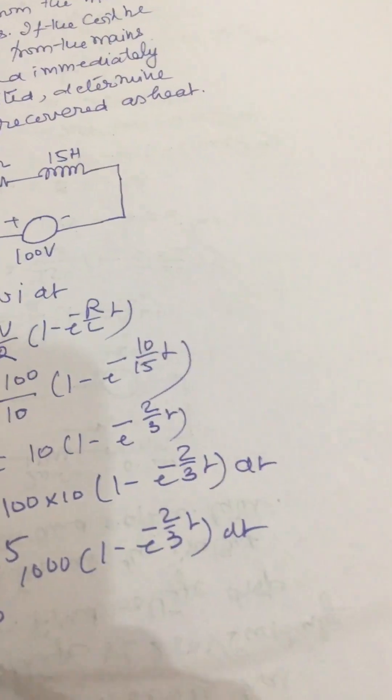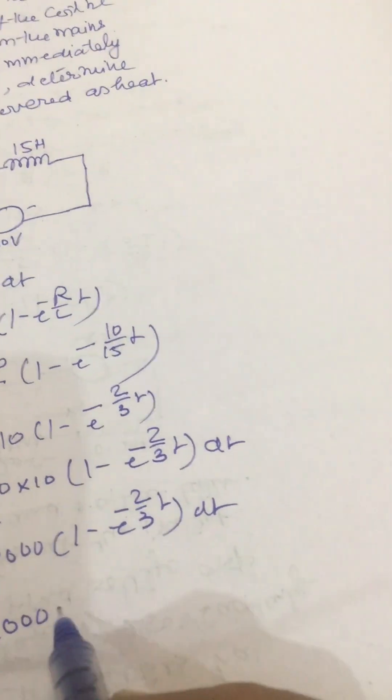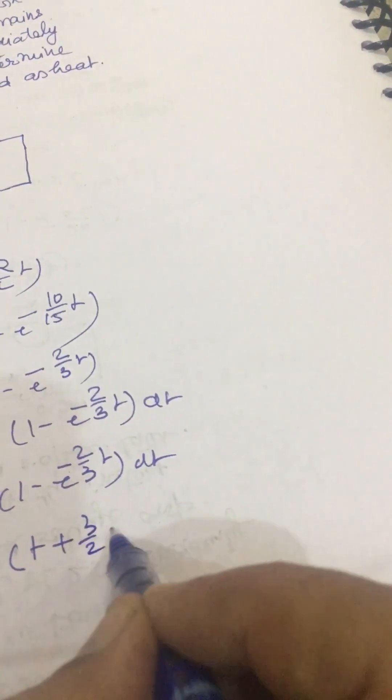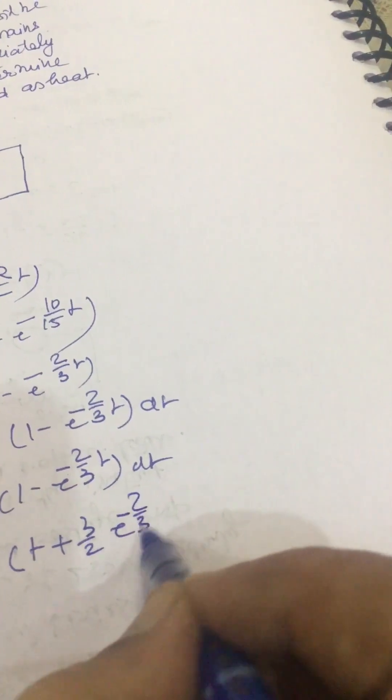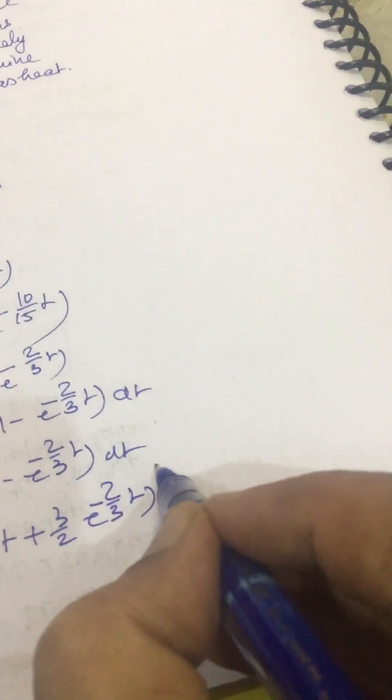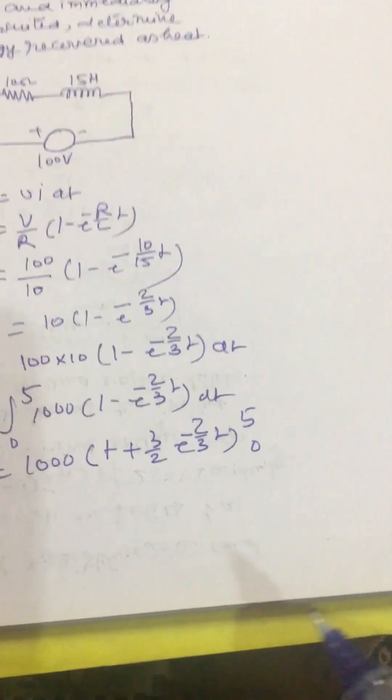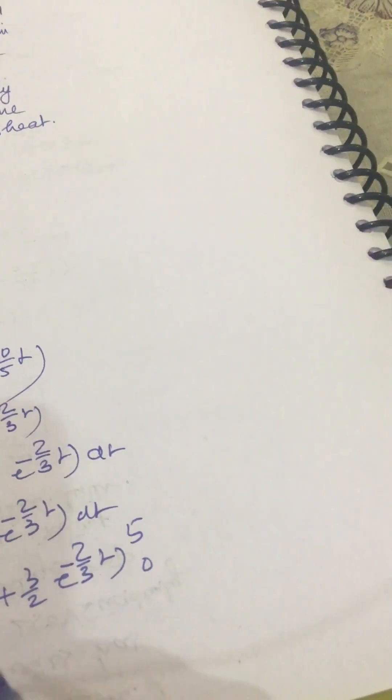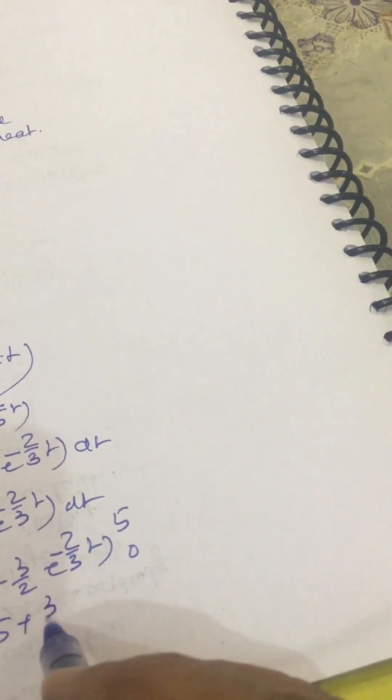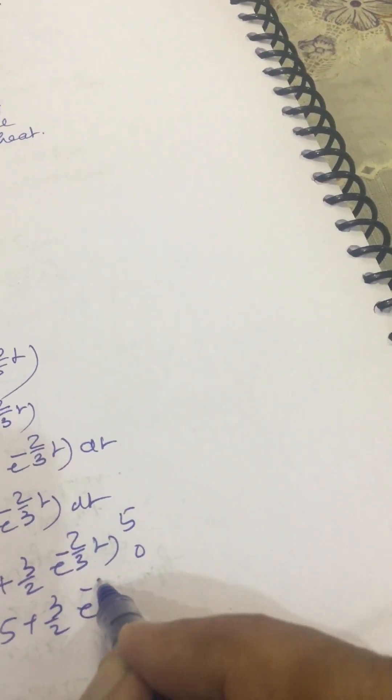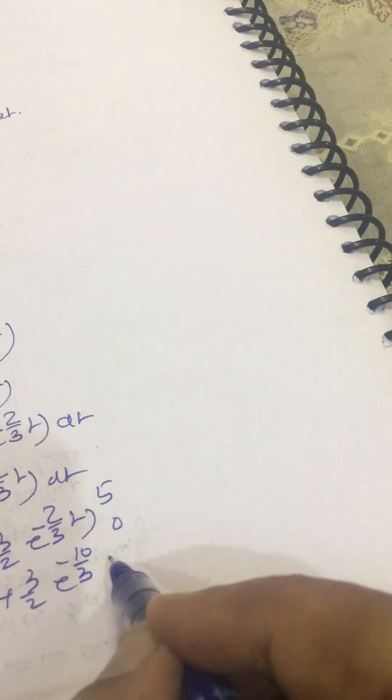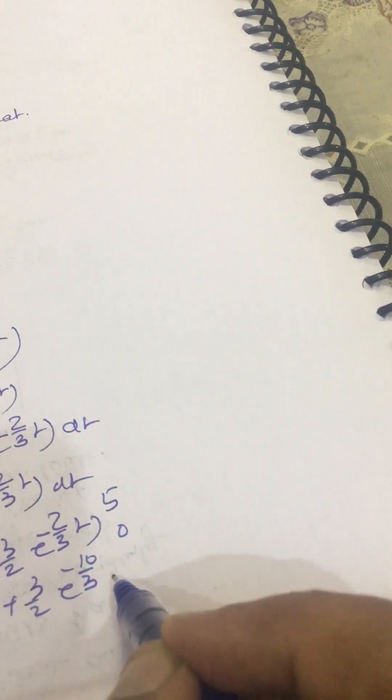Integrating it we get 1000 times t plus 3/2 e to power minus 2t/3, evaluated from 0 to 5. Putting these values we get 5 plus 10 by 3...